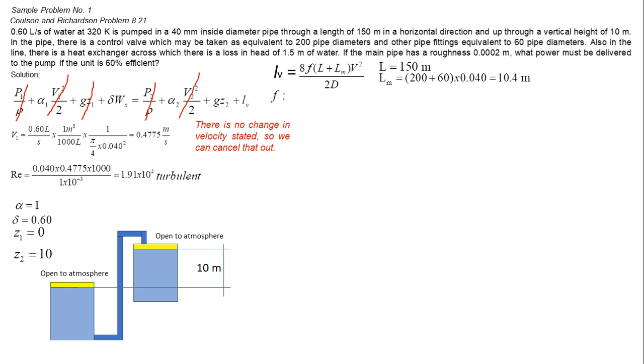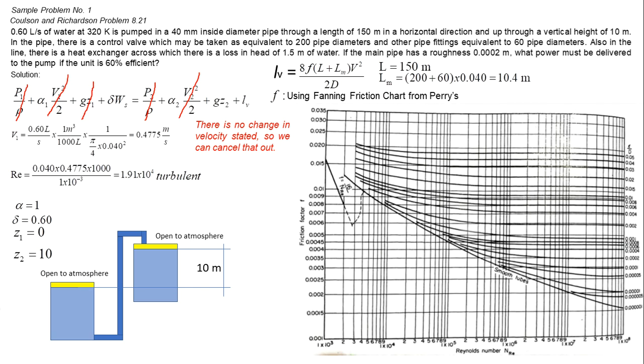Solving for friction factor, let's evaluate using the different charts and correlation. Surface roughness over pipe diameter equals 0.005. Plotting E over D from the chart with Reynolds number projecting upwards until intersecting the E over D line, we can project straight to the left and read the value of friction factor.